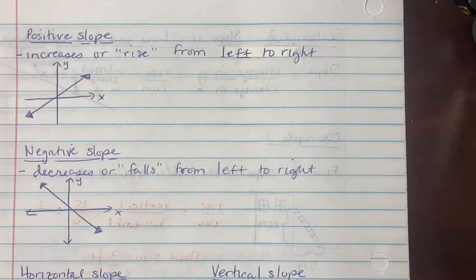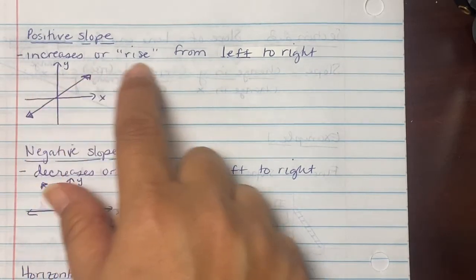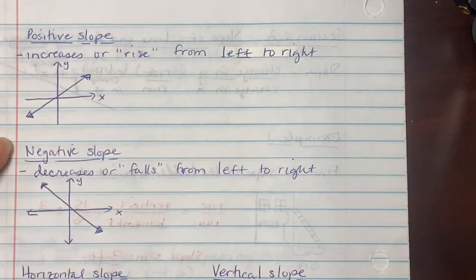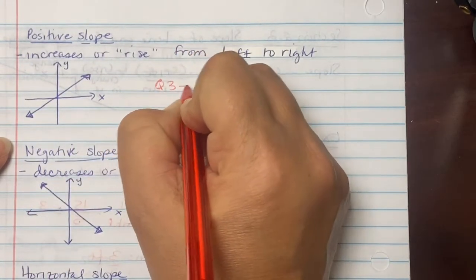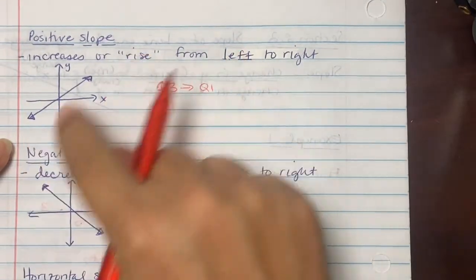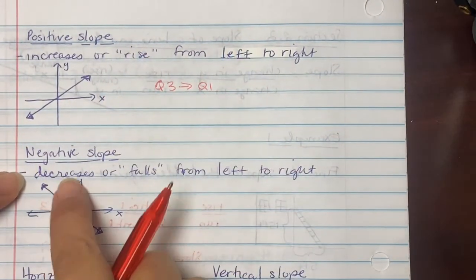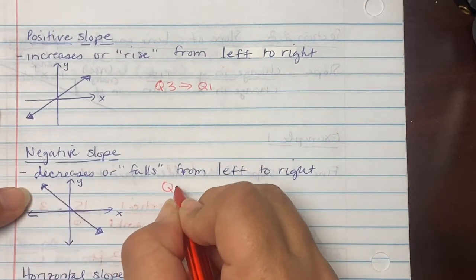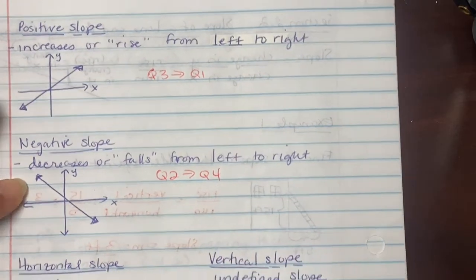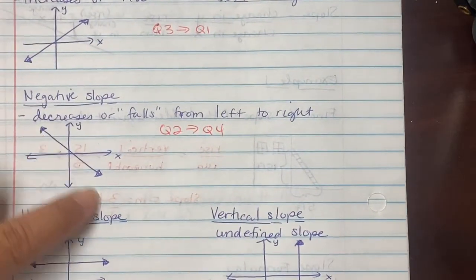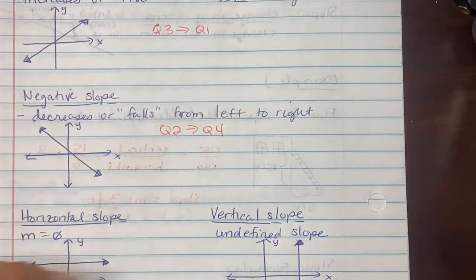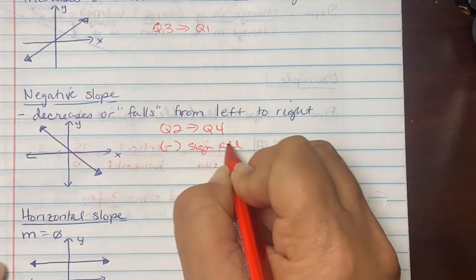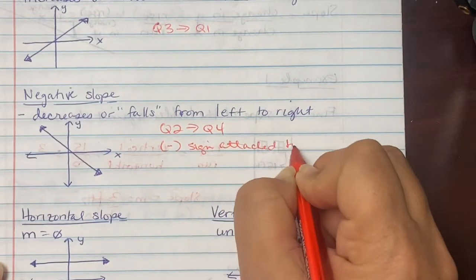The different types of slopes: a positive slope means the line increases or rises from left to right, going from quadrant three toward quadrant one. A negative slope means the line decreases or falls from left to right, going from quadrant two down to quadrant four. Negative slopes always have a negative sign attached to their values.